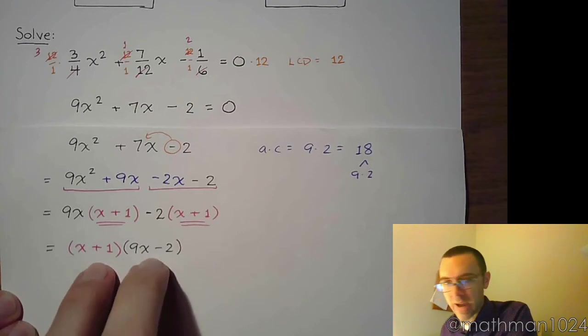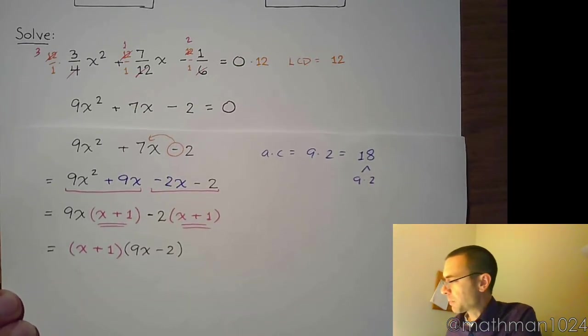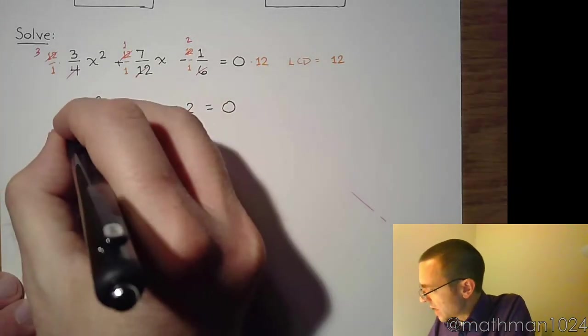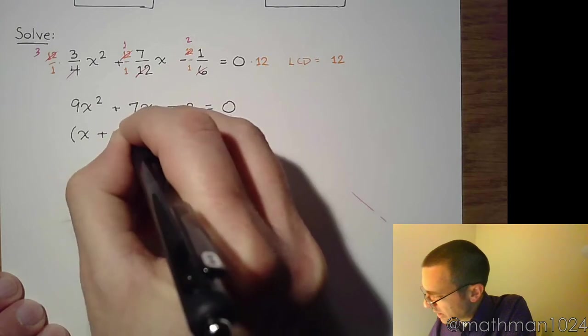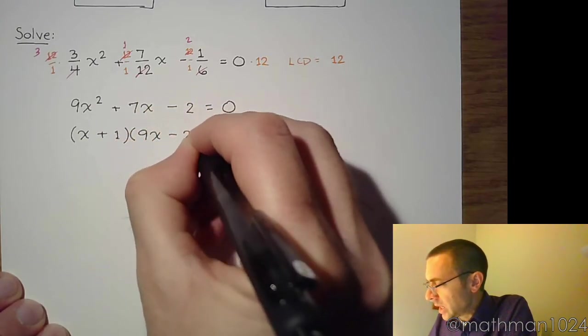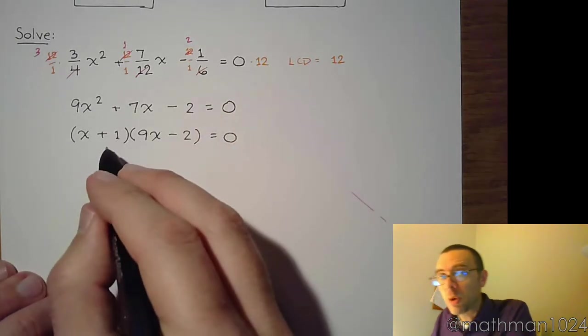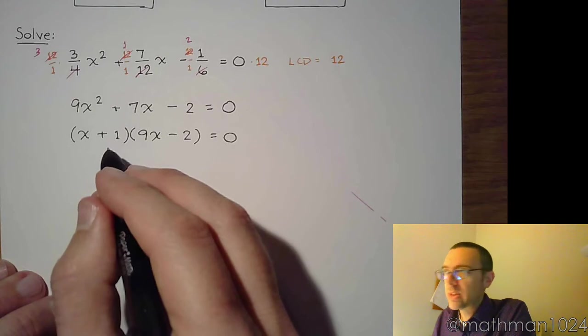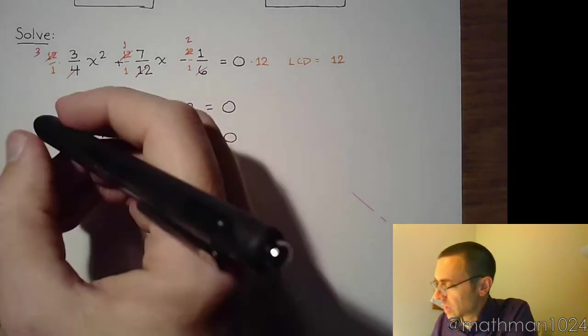So let's take the factorization that we did on this extra piece of paper, and let's put that in. So this factors as x plus 1 times 9x minus 2. And it's a good use of your time to take this factorization and multiply it back out just to make sure that you did factor everything correctly, paying attention to your signs.